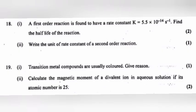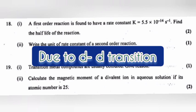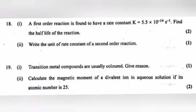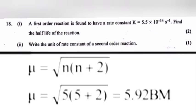Question 19 Part 1: Transition metal compounds are usually colored — give reason. Answer: Due to d-d transition. Part 2: Calculate the magnetic moment of a divalent ion in aqueous solution if its atomic number is 25. Answer: μ = √(n(n+2)) = √(5×7) = √35 = 5.92 BM.